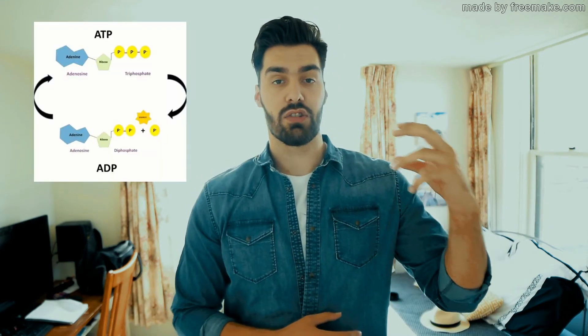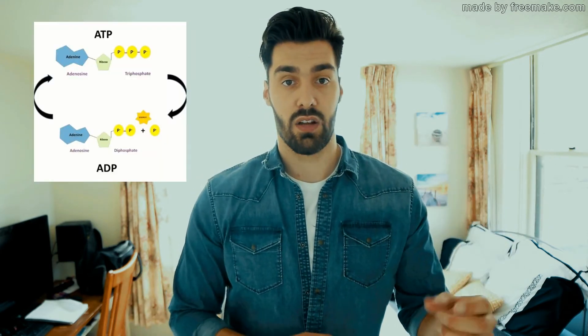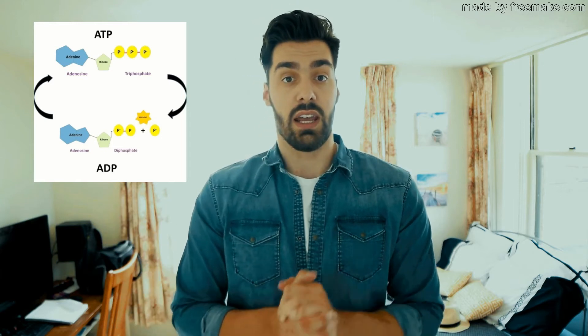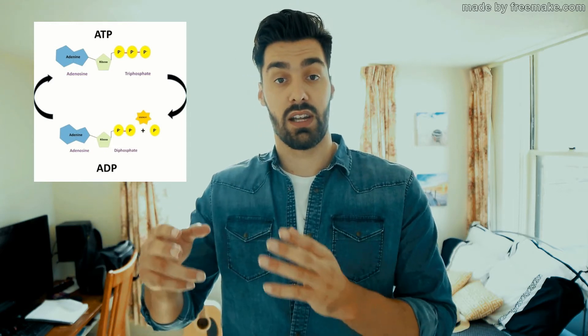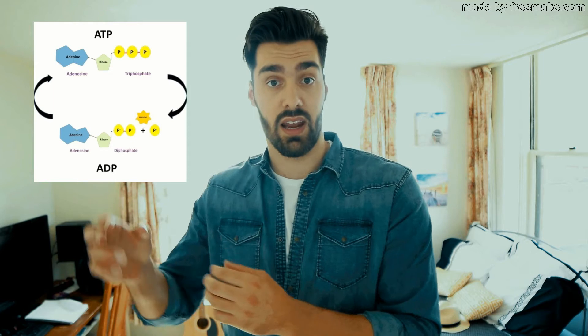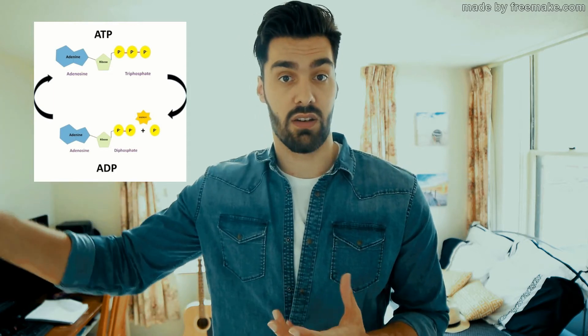The way the human body produces energy or muscle contraction starts with chemical reactions that include ATP and CP. Adenosine triphosphate through hydrolysis is broken down into adenosine diphosphate and an extra phosphate. For adenosine diphosphate to come back to adenosine triphosphate, we need creatine phosphate.